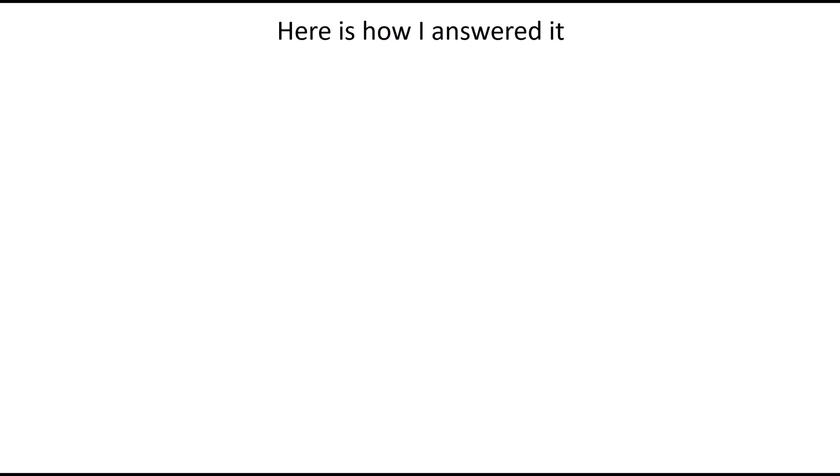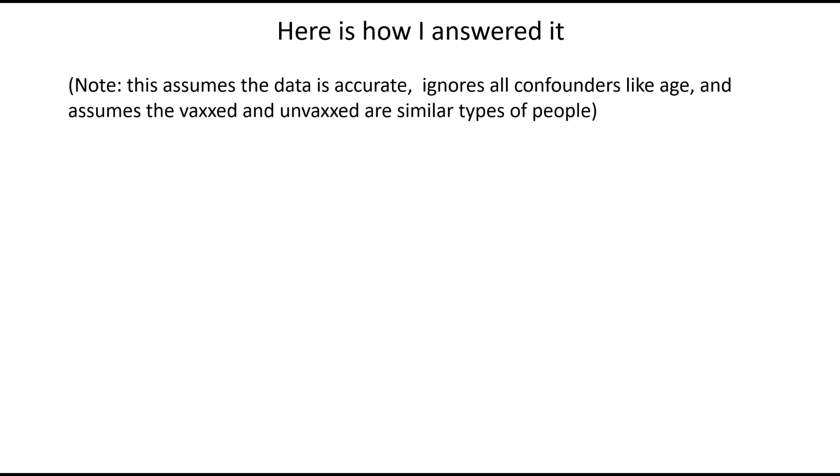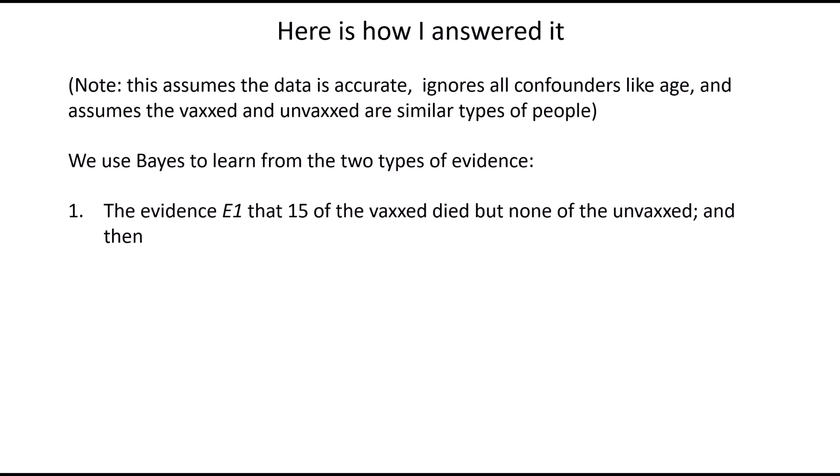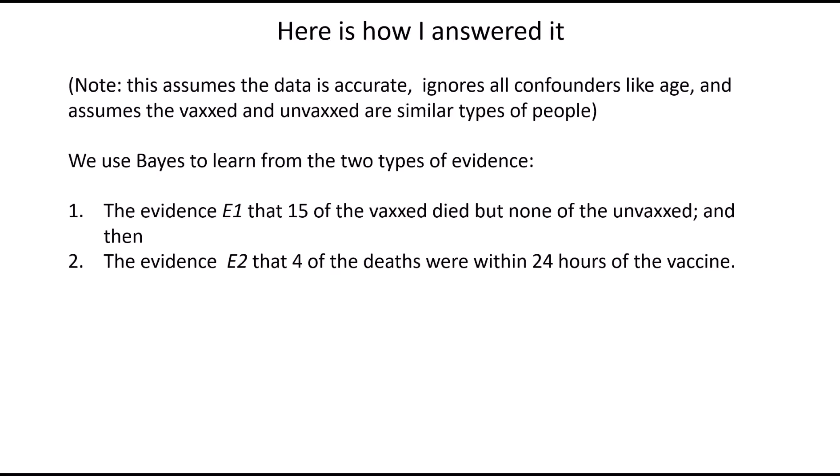Here's how I answered that question. The solution assumes the data are accurate, ignores all confounders like age, and assumes the vaccinated and unvaccinated are similar types of people — so it's a gross simplification. We're going to use Bayes to learn from two types of evidence: first, that 15 of the vaccinated died but none of the unvaccinated; and second, that four of the deaths were within 24 hours of vaccination.